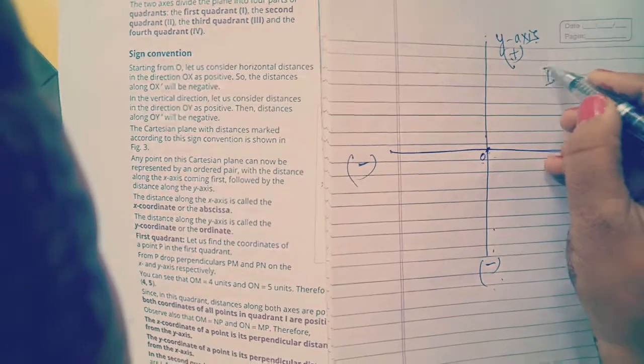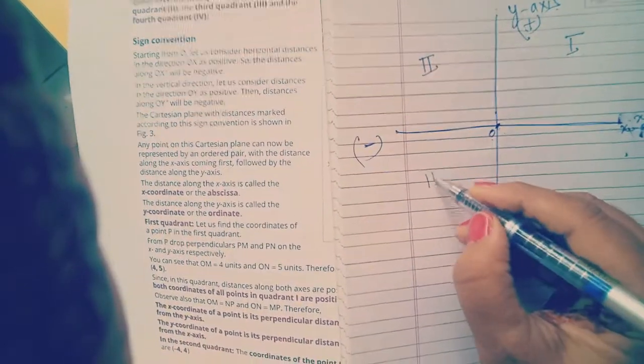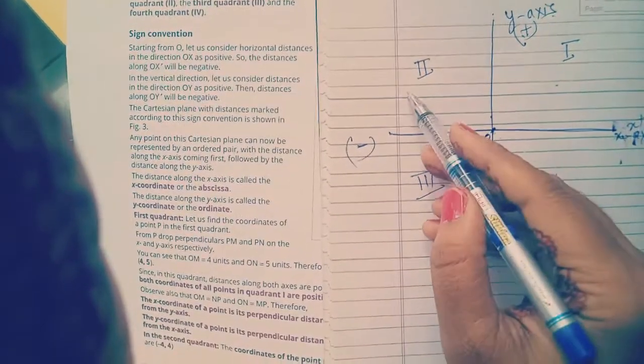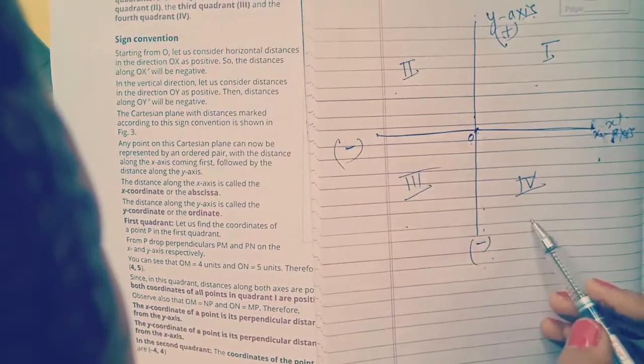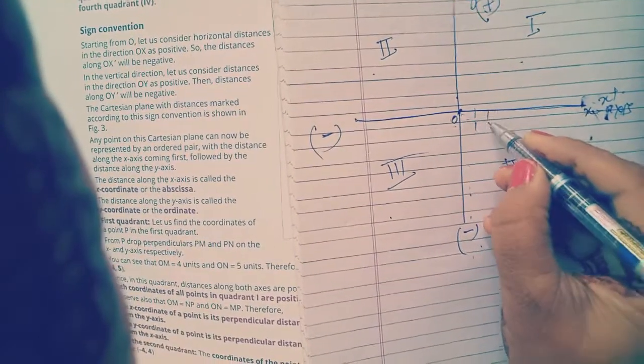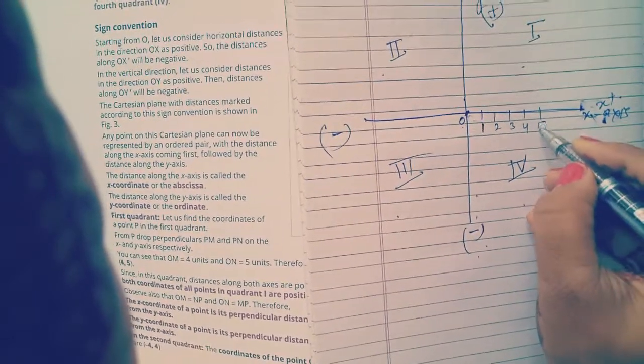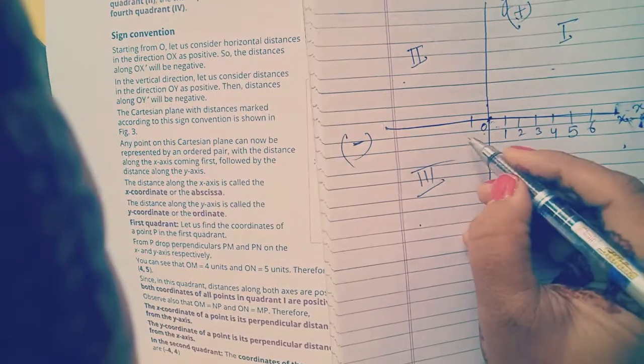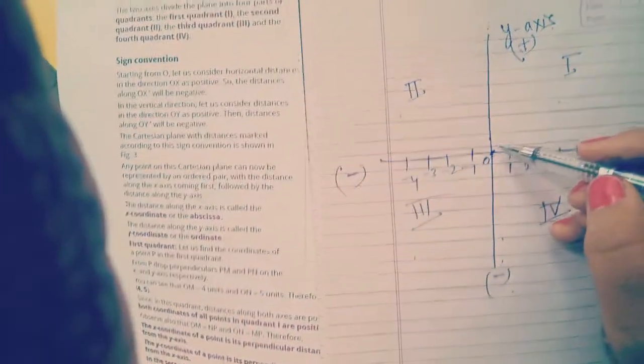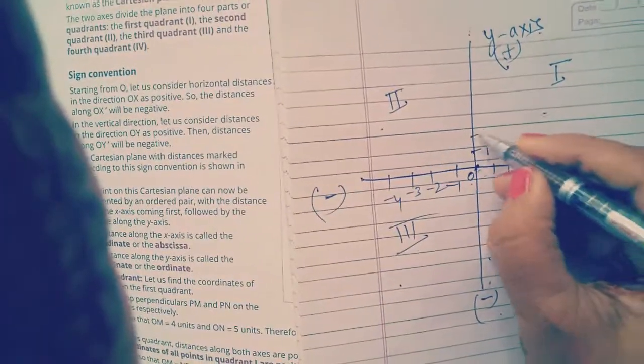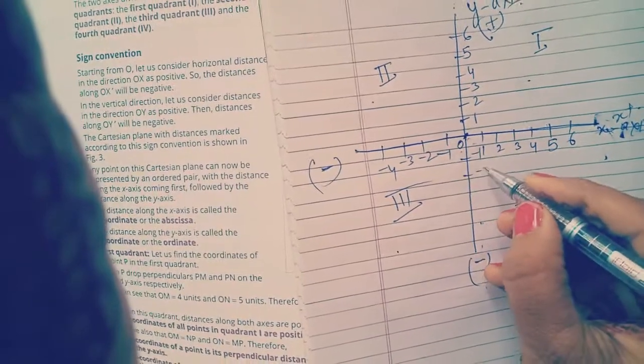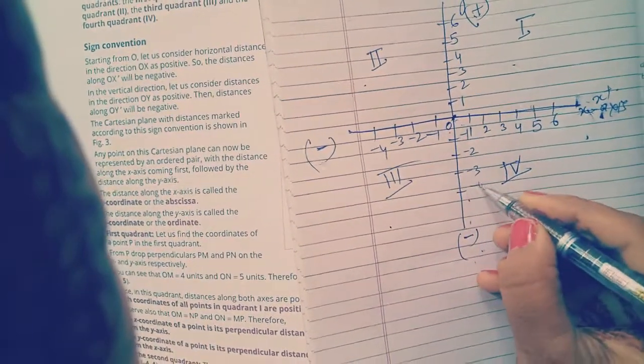So this is the first quadrant, second quadrant, third quadrant, fourth quadrant. This will be anticlockwise. First quadrant, second quadrant, third quadrant, fourth quadrant. Like here, we will write positive value of x. So here I will put 1, 2, 3, 4, 5, 6, and so on. And on the left hand side, minus 1, minus 2, minus 3, minus 4, and so on. And the upper side, we will write positive value of y. And downward, we will write negative value of y.